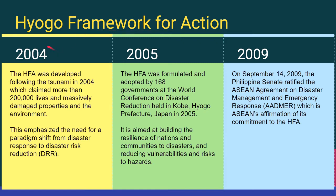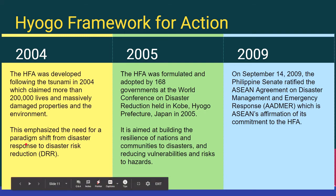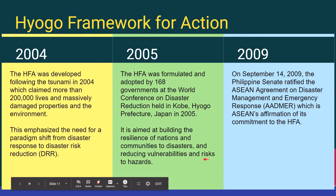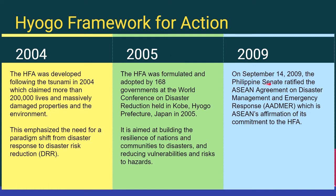The Hyogo Framework for Action was developed in 2004 following the tsunami which claimed more than 200,000 lives. It emphasizes the need for a paradigm shift — from disaster response to disaster risk reduction — because before this time, all efforts were made after disasters had already occurred. The HFA was adopted by 168 governments at the World Conference on Disaster Reduction in Kobe, Japan in 2005, aimed at building resilience of nations and reducing vulnerabilities, risks, and exposure to hazards. By 2009, the Philippine Senate ratified the ASEAN Agreement on Disaster Management and Emergency Response, affirming its commitment to the HFA.